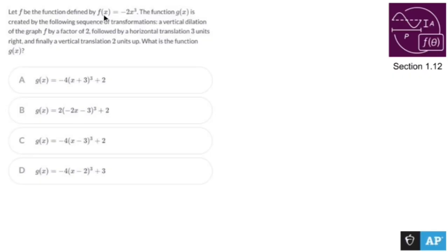Let f be the function defined by f(x) = -2x³. The function g(x) is created by the following sequence of transformations: a vertical dilation by a factor of two, then a horizontal translation, and then a vertical translation. Let's go in order.